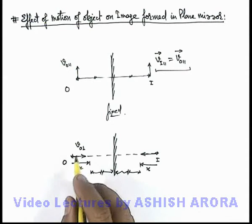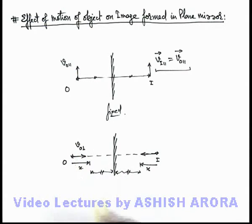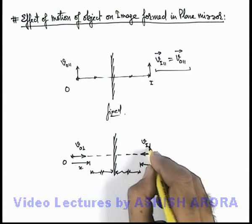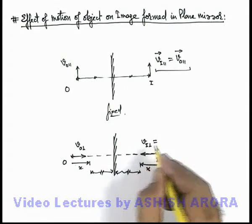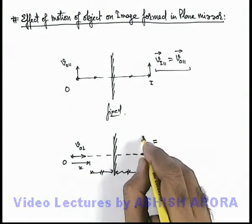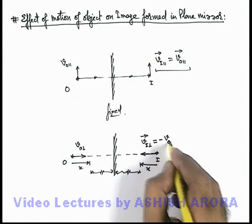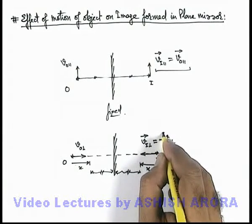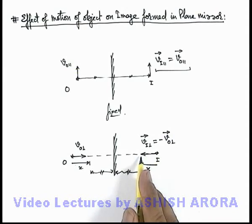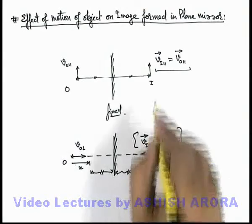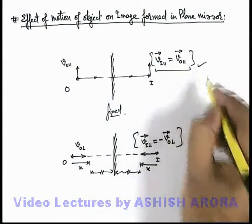So here we can see if the object is moving with a velocity v_o perpendicular, the velocity of the image in the perpendicular direction will again be equal to the velocity of the object. But vectorially it can be written as negative of the velocity of the object in the perpendicular direction because its direction is opposite. So both of these results are quite useful and you should keep them in mind.